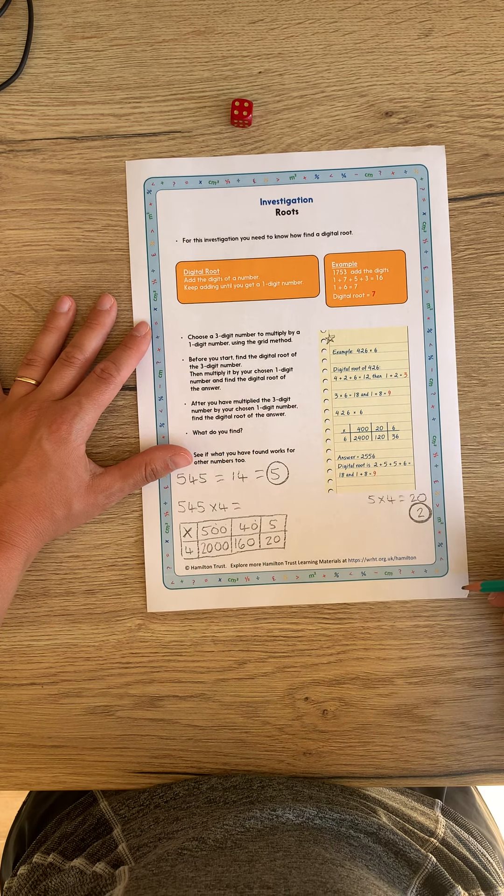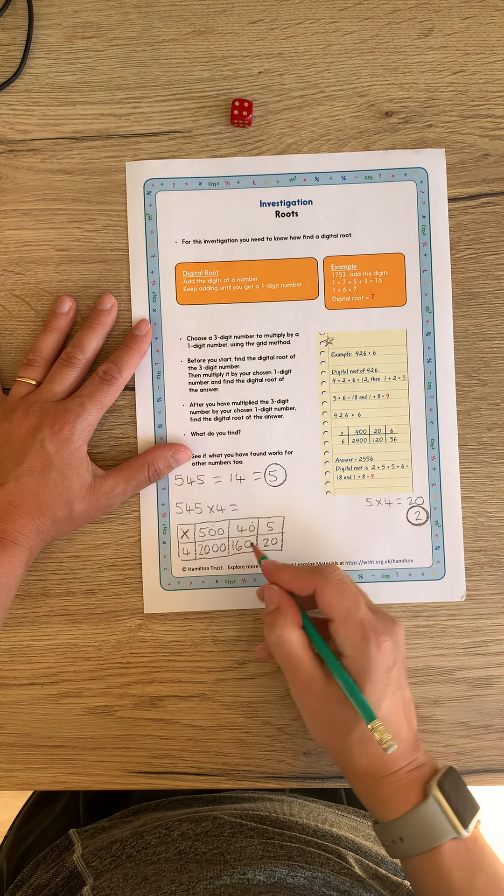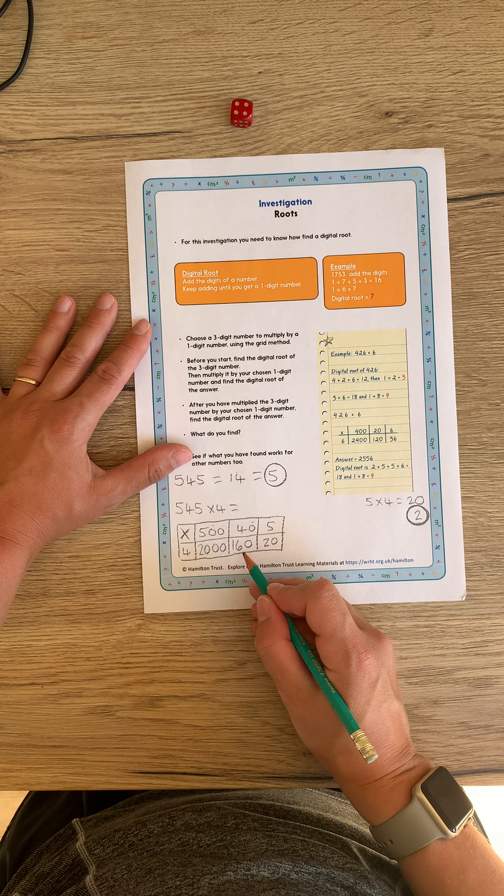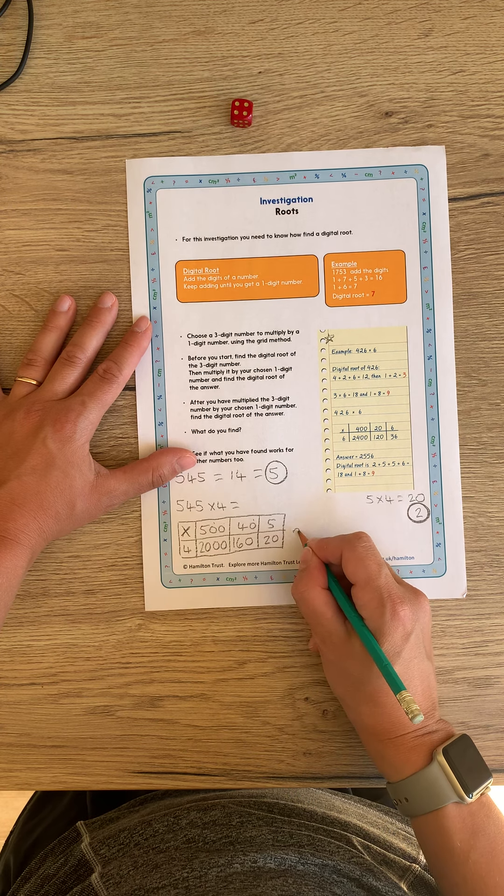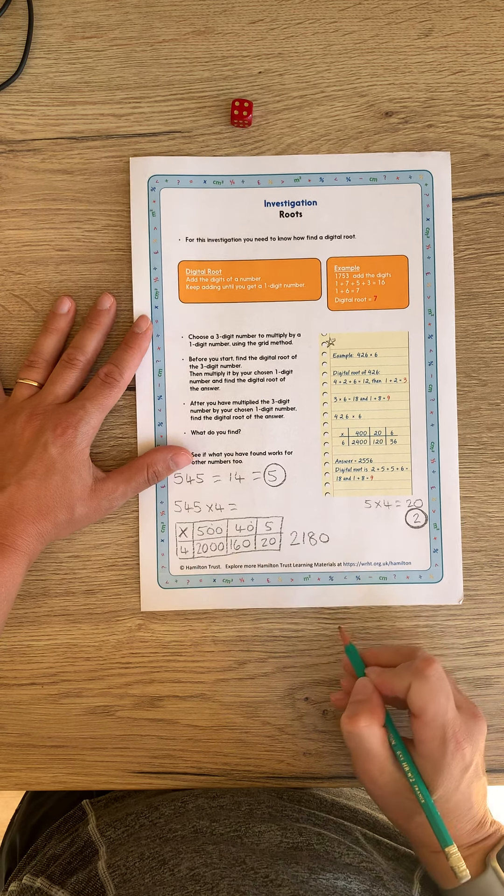And then I'm going to add all these together. If you can mentally in your head, excellent. If you need to use the column addition, that's also fine. But I know that 2000, my answer will be 2180. So 2180.